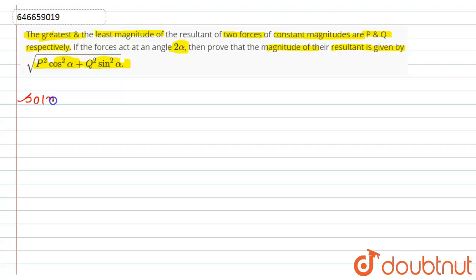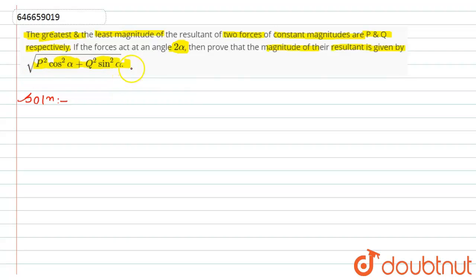So let's see the solution — it is very simple actually. It is given in the question that we have the greatest and least magnitude of the resultant of two forces whose constant magnitudes are p and q. If the angle between them is twice alpha, then we have to prove the magnitude of the resultant is under root of p squared cos squared alpha plus q squared sin squared alpha.